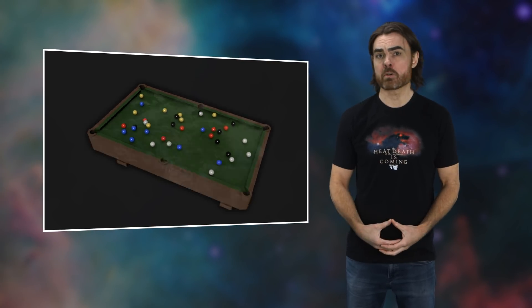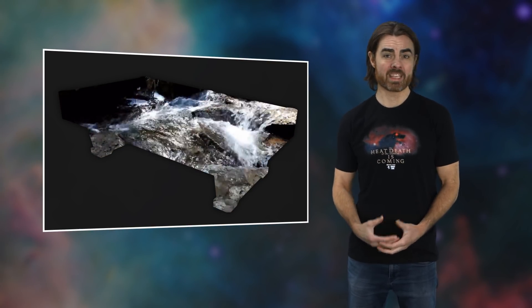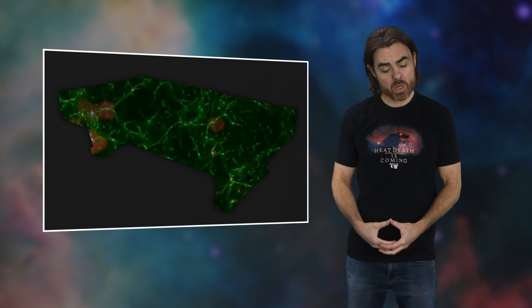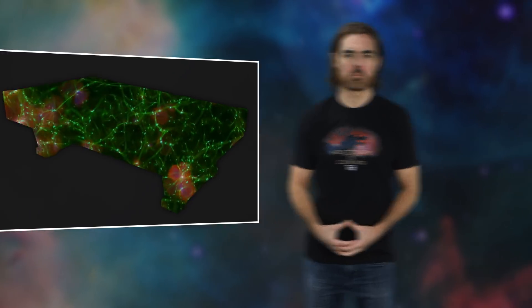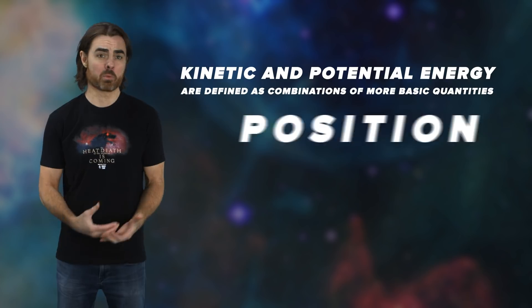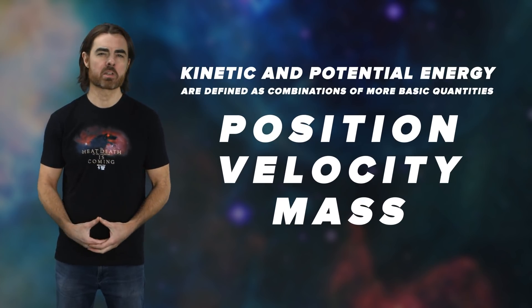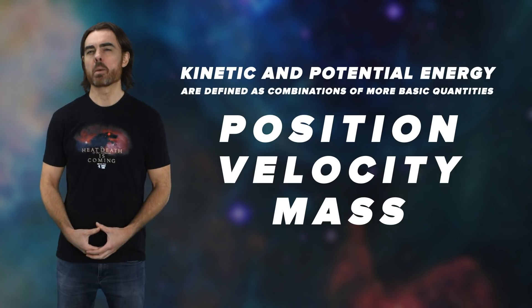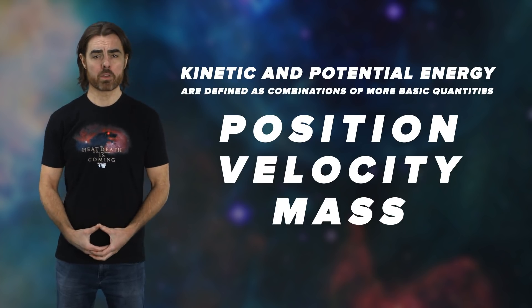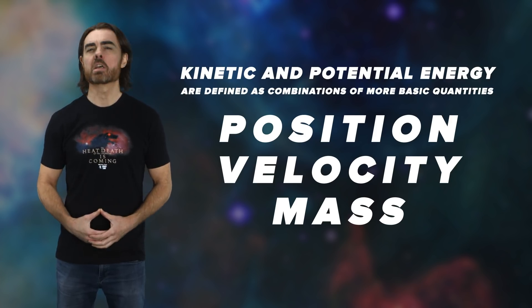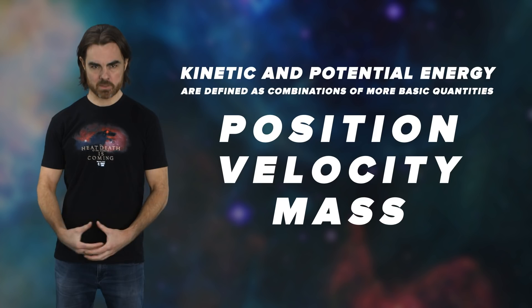And not just for one particle, but for any system of any number of interacting particles. After all, the interactions between particles are ultimately due to fundamental forces, which are always conservative. Kinetic and potential energy are defined as combinations of more basic quantities — for example, position, velocity, and mass. These combinations are chosen so that their sum is conserved. But it's actually remarkable that there's any such combination of quantities that is conserved. This fact gives us insight into the fundamental symmetries of nature.